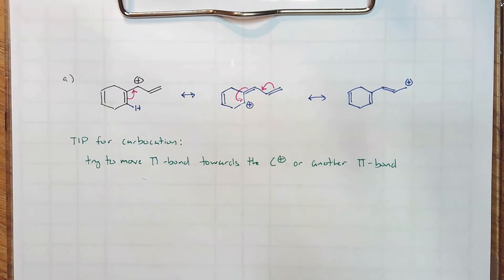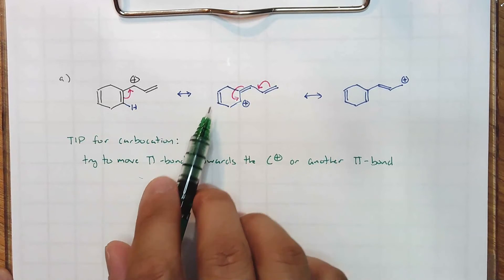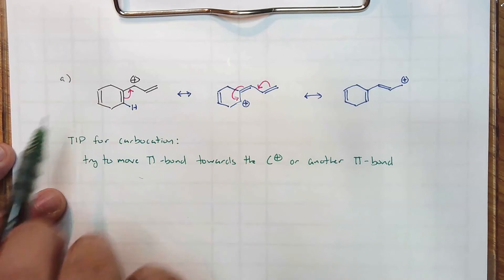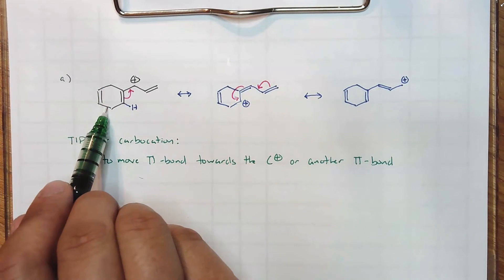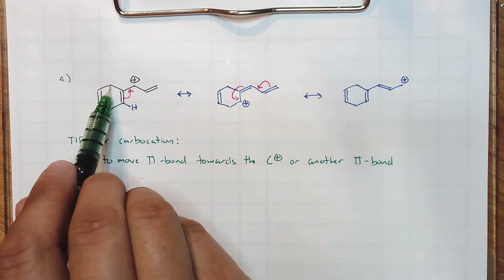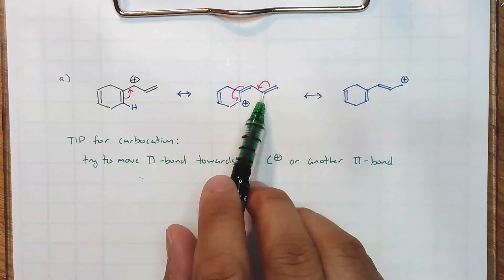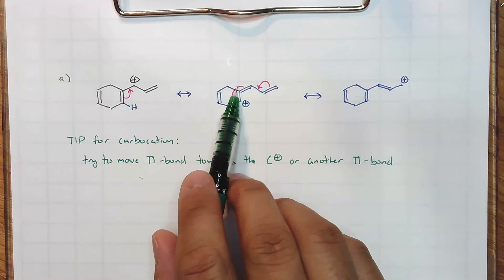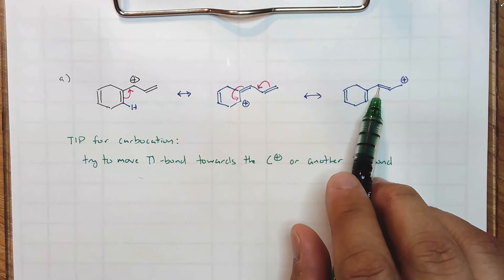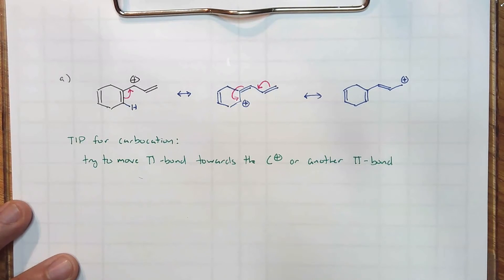Some of you may be asking: what about this pi bond in the middle that never moved? It never participated because if I move it to the adjacent bond on the top or bottom, I'm going to make a carbon with five bonds and I cannot resolve it — I can't fix it right away. In the case where I do make a double bond, I can fix that carbon right away by shifting that double bond away to get it back to four bonds. That's your carbocation example.